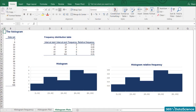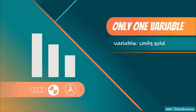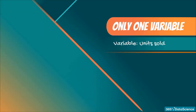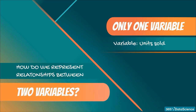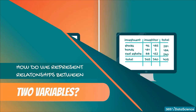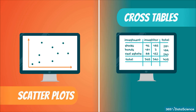This is how we can build a histogram to represent numerical data. So far, we have covered graphs that represent only one variable. But how do we represent relationships between two variables? In this video, we'll explore cross tables and scatter plots.